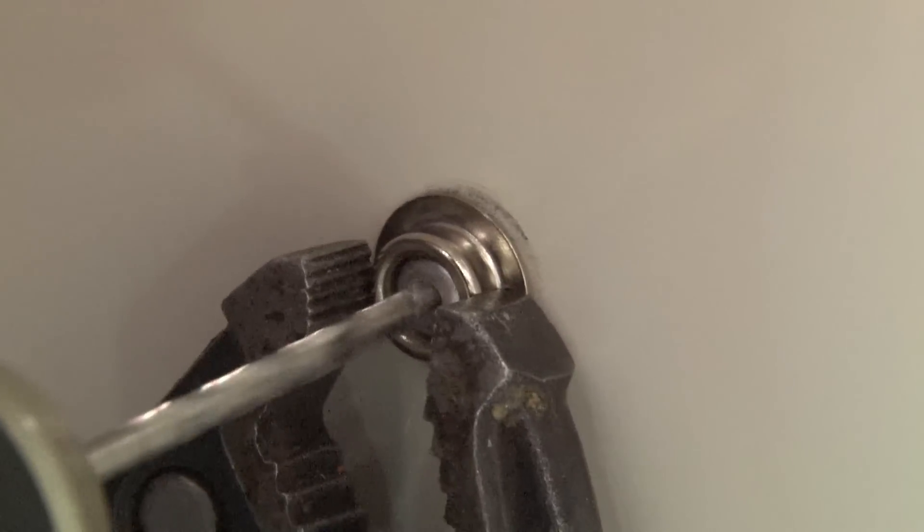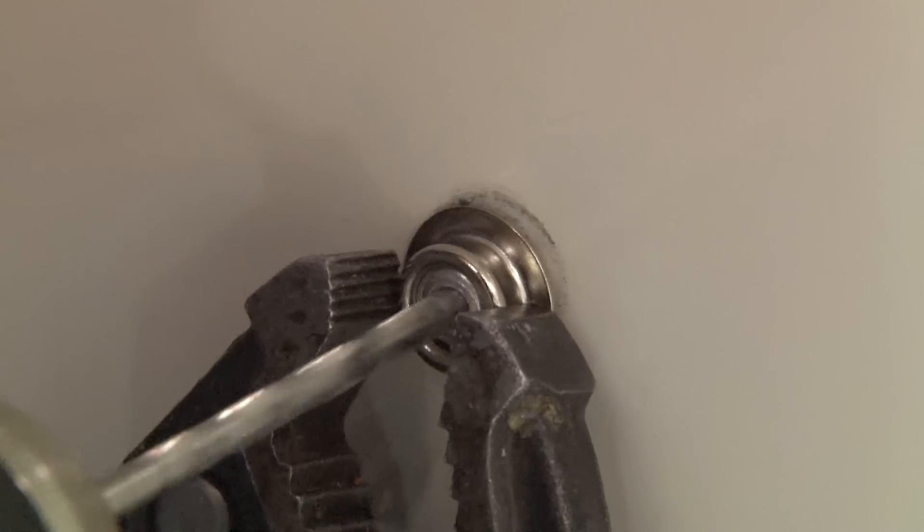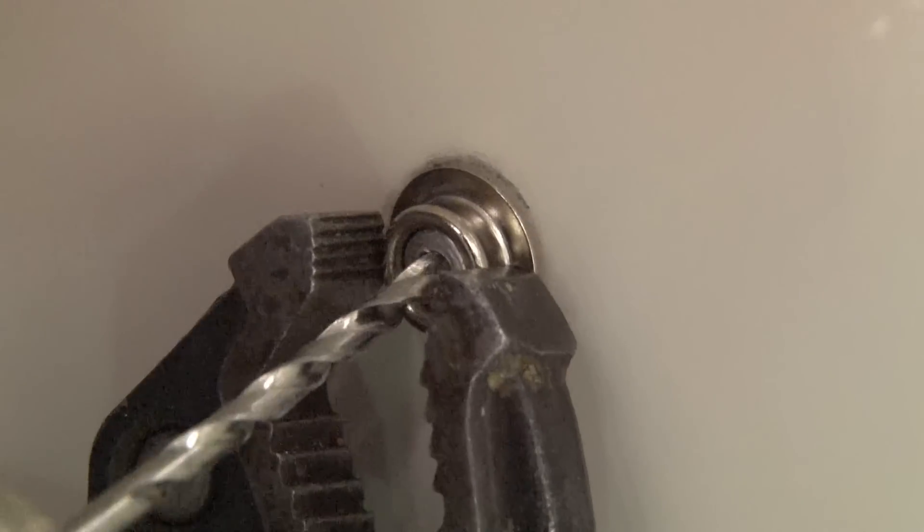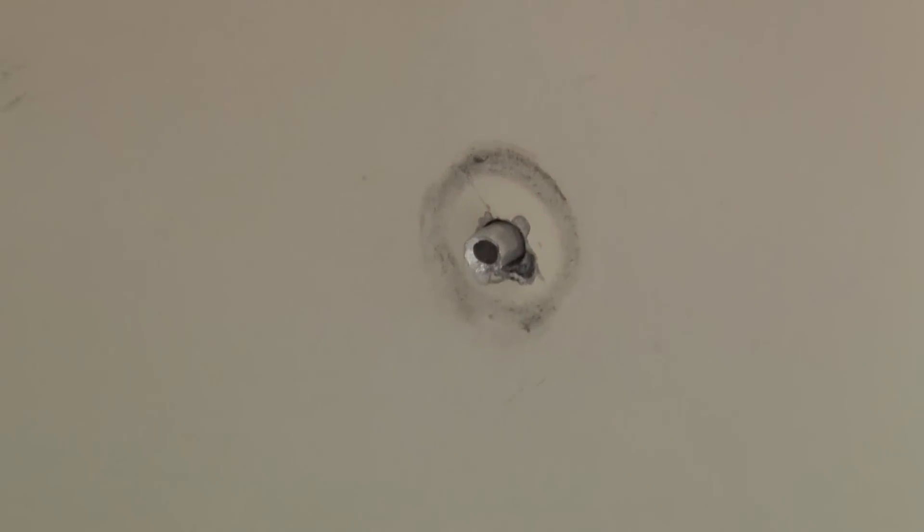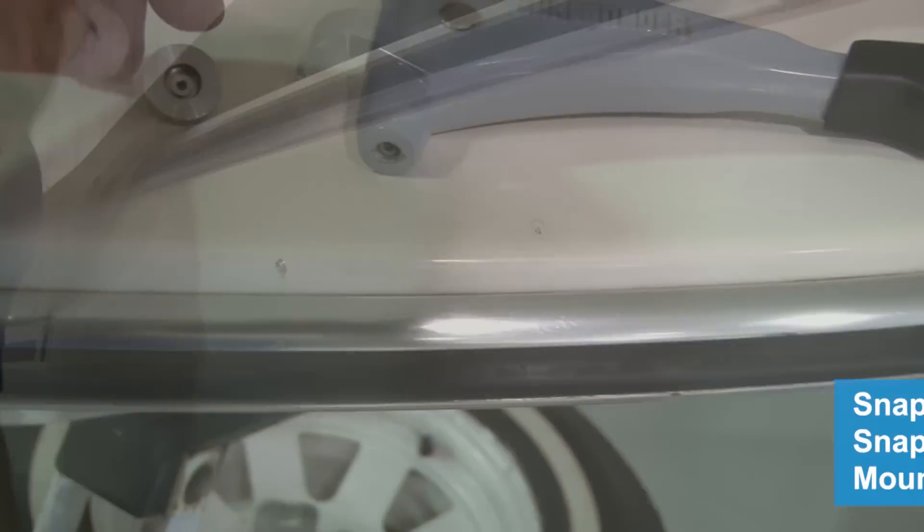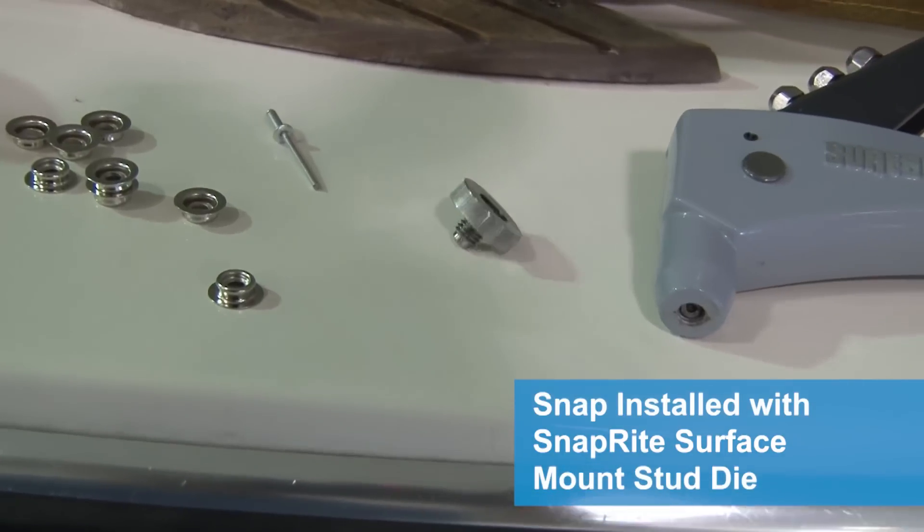Let's remove this poorly installed stud using a pair of pliers and a drill bit to drill off the head of the rivet. Let's now show you how easy it is to install this snap appropriately using the Snaprite Surface Mount Stud Die in only 4 easy steps.